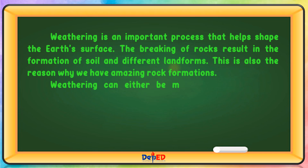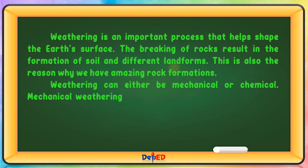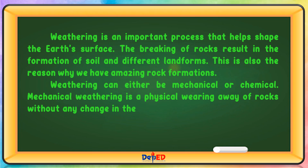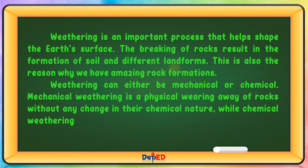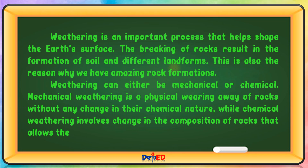Weathering can either be mechanical or chemical. Mechanical weathering is a physical wearing away of rocks without any change in their chemical nature, while chemical weathering involves change in the composition of rocks that allows them to break down into pieces.